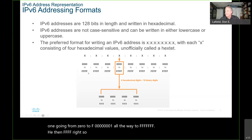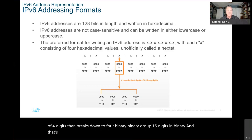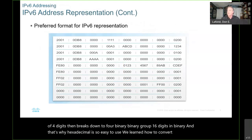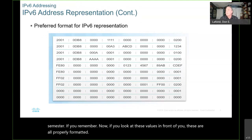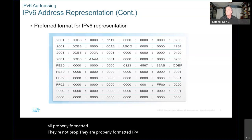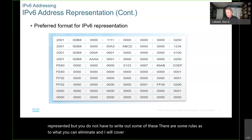Each group of four hex digits can range from 0000 to FFFF. One group of four digits breaks down to four binary groups — 16 digits in binary — and that's why hexadecimal is so easy to use. These are all properly formatted IPv6 addresses, but you do not have to write out some of these. There are rules as to what you can eliminate, which I will cover over the next few slides.